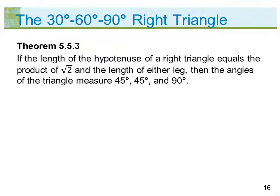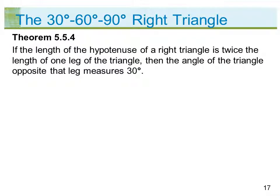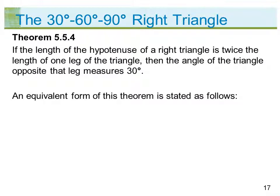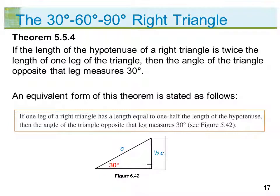Theorem 5.5.3: If the length of the hypotenuse of a right triangle equals the product of the square root of 2 and the length of either leg, then the angles of the triangle measure 45 degrees, 45 degrees, and 90 degrees. Theorem 5.5.4: If the length of the hypotenuse of a right triangle is twice the length of one leg of the triangle, then the angle opposite that leg measures 30 degrees. An equivalent form states: if one leg of a right triangle has a length equal to one-half the length of the hypotenuse, then the angle opposite that leg measures 30 degrees. See figure 5.42.